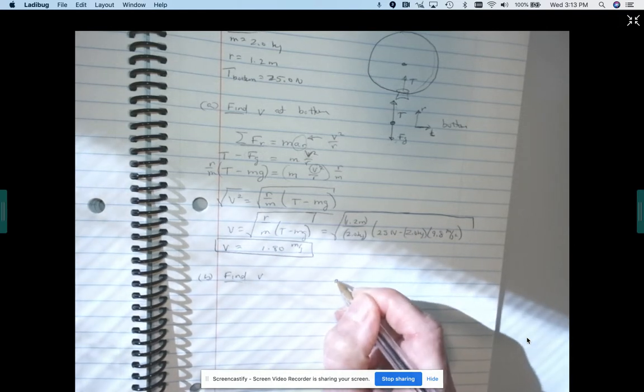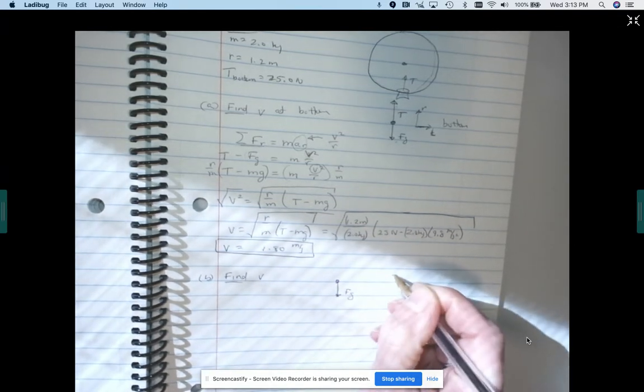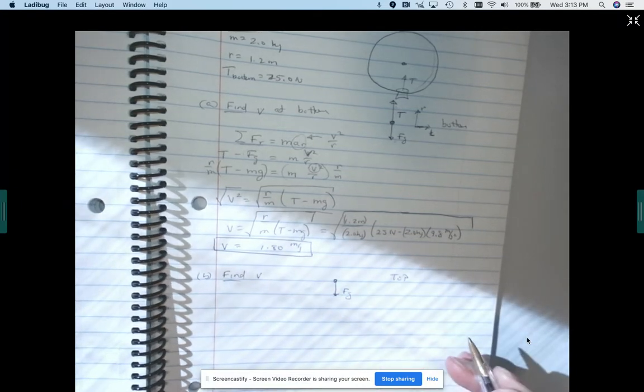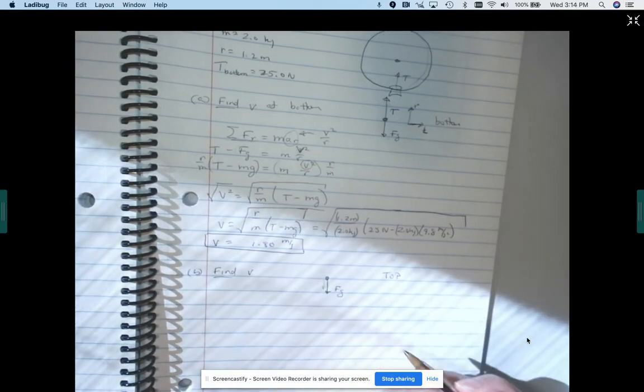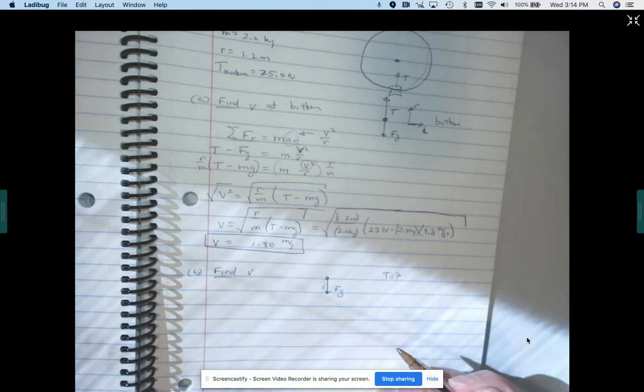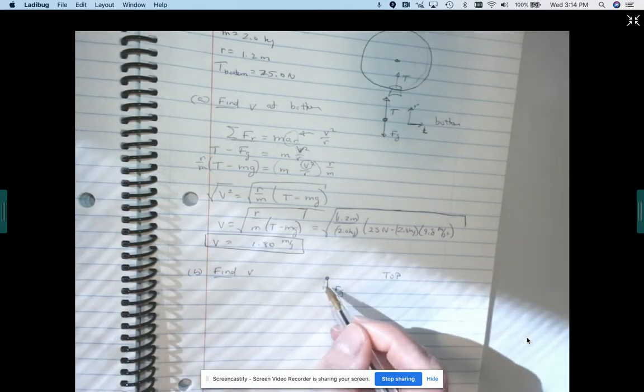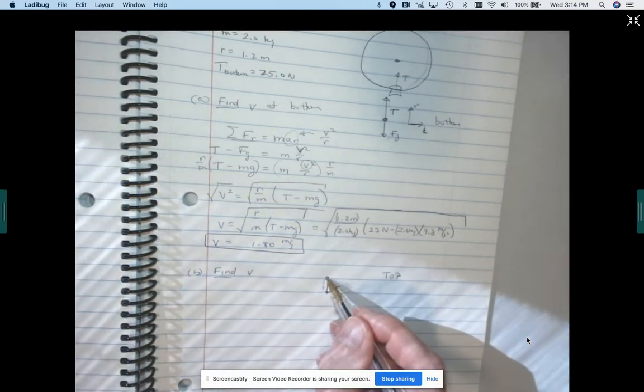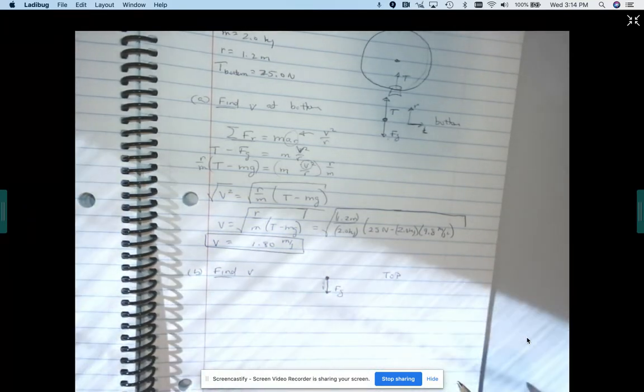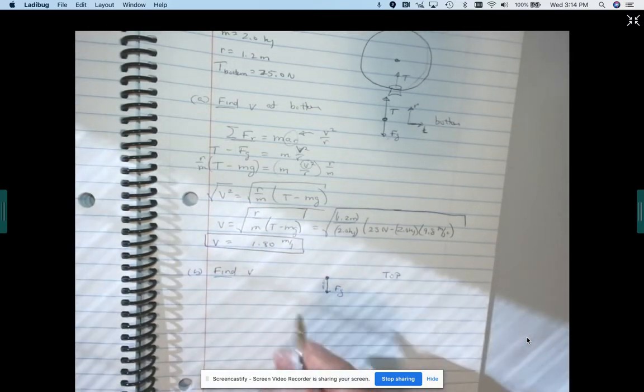And our free body diagram, if we think about it, so force of gravity would be the same, right? So now this is at the top. And if we were going super fast, we'd have to have tension acting down with that. But, and if we slow down and slow down, the tension would get less and less and less. And we'd get to the point where just gravity is going to provide enough force to make it go in a circle. So that's kind of the situation that we're looking at.